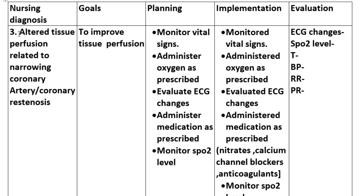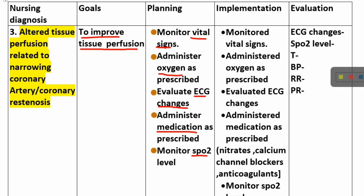Nursing Diagnosis number 3: Altered tissue perfusion related to narrowed coronary artery. Goal: to improve tissue perfusion. Planning and Implementation: monitor vital signs, administer oxygen as prescribed, evaluate ECG changes, administer medications as prescribed — for example nitrates, calcium channel blockers, anticoagulants — and monitor saturation level.